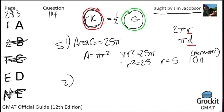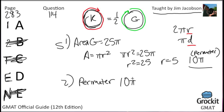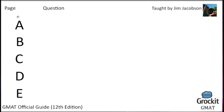Statement 2: the edging around G is 10π meters long — that's the perimeter. We know that the perimeter of K is half the perimeter of G, so the perimeter of K is also 5π. Either statement is sufficient on its own. Answer choice E — I mean D — is correct. I'd rather have the statements be sufficient because I get to figure out the problem the rest of the way.